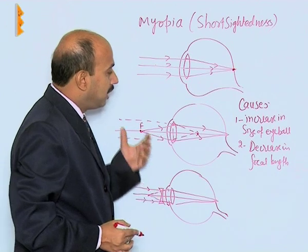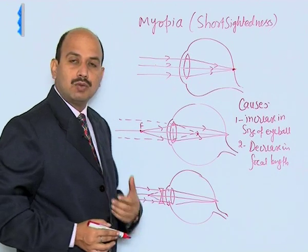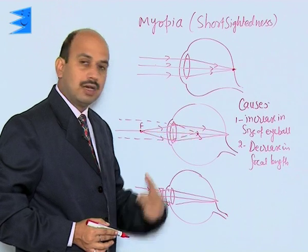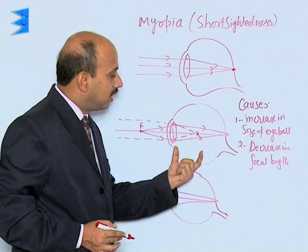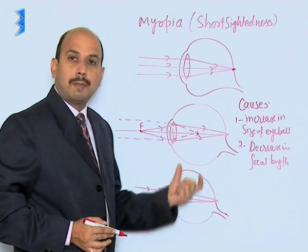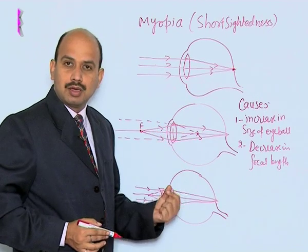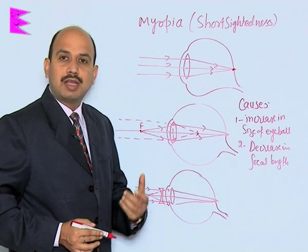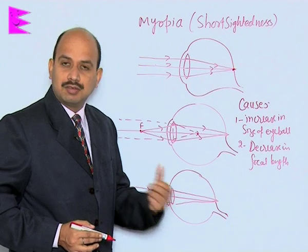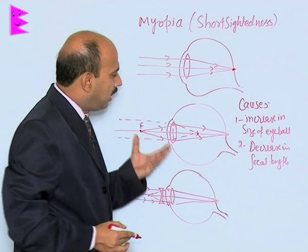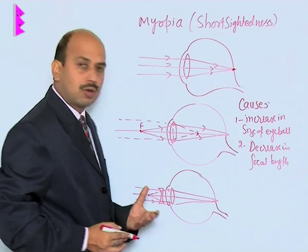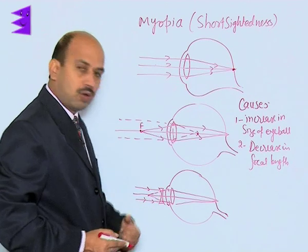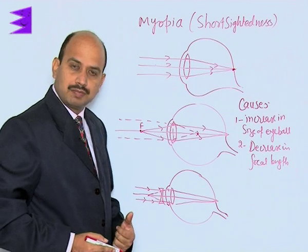When the object is at infinity, you cannot see its image because the image is not obtained on the retina. So this is the diagram for a myopic eye, which cannot see objects at infinite distance. This can be corrected by using a concave lens.